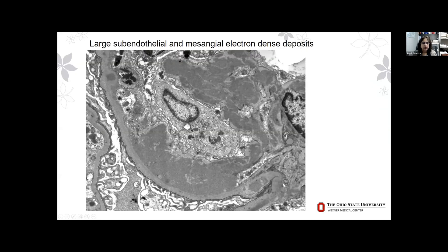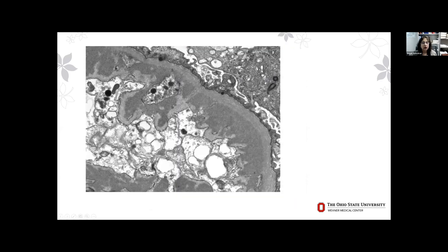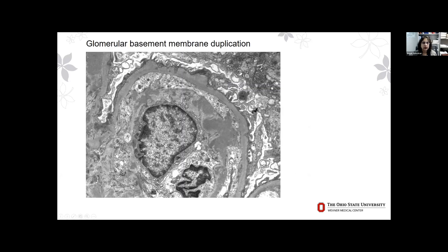On electron microscopy, there were large subendothelial deposits. There were a few small intramembranous deposits, but no large subepithelial humps — mainly subendothelial deposits without any substructure. There was also significant podocyte foot process effacement and already some GBM duplication: you can see the original glomerular basement membrane with a new GBM forming, almost like tram tracking, with electron-dense deposits entrapped.